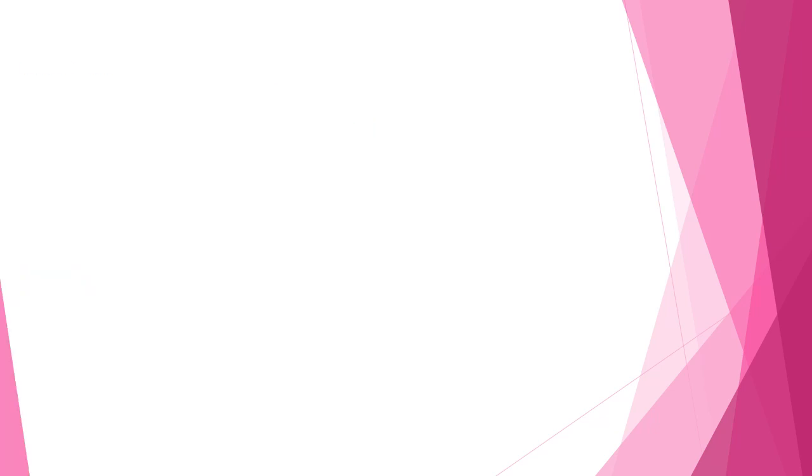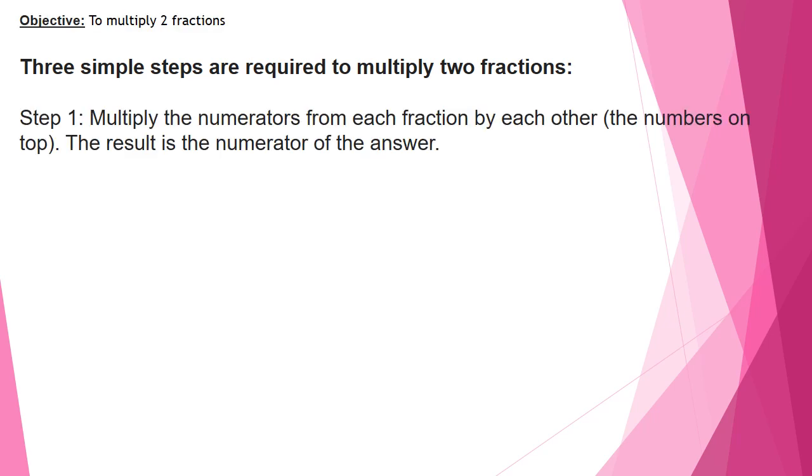Let us start with the first objective. Three simple steps are required to multiply two fractions. Step one, multiply the numerators by each other. And remember that the numerators are the numbers that are on the top.